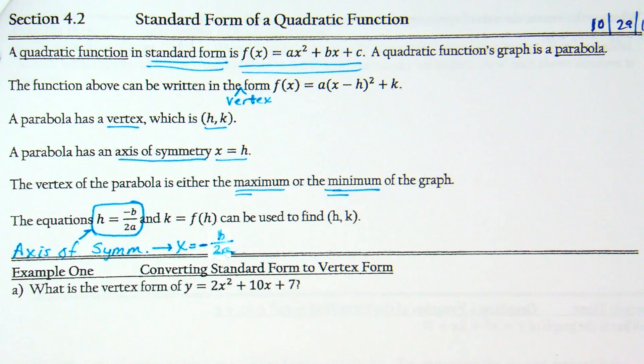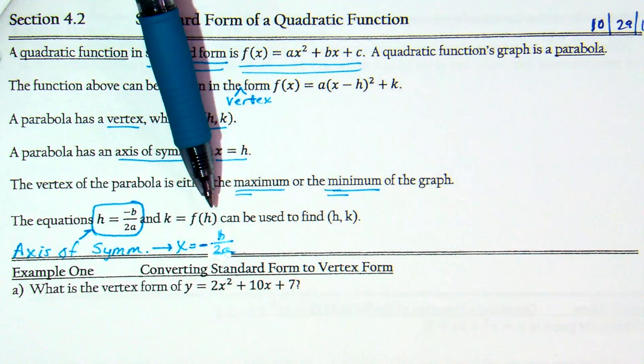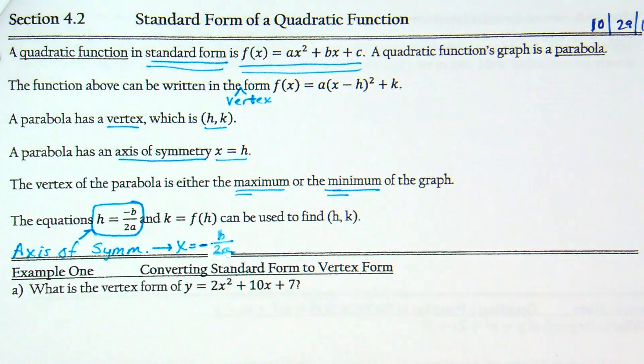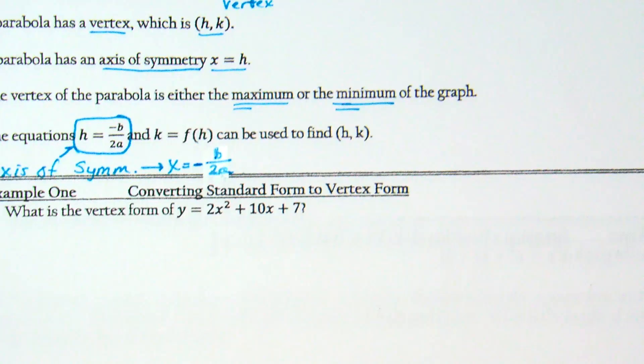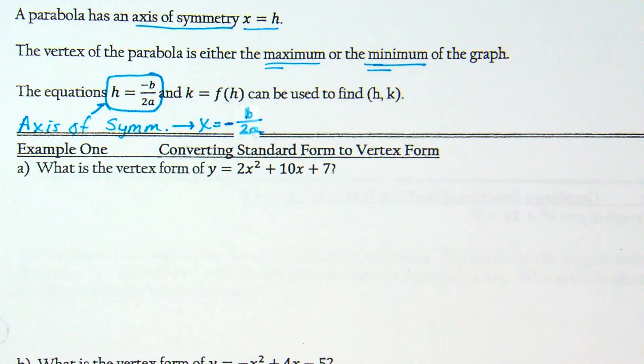When it says to find k, it's f of h. All that means is taking your value you find, your axis of symmetry, and plugging it into the equation. Our first example here. What is the vertex form of y equals 2x squared plus 10x plus 7?